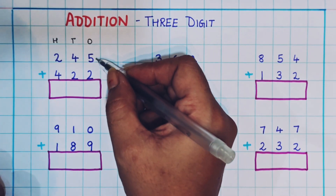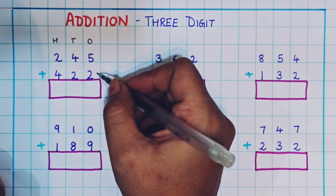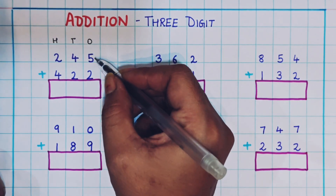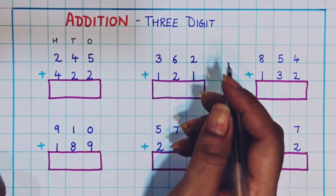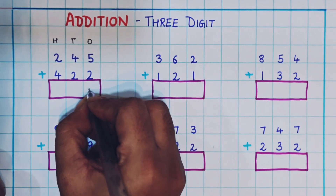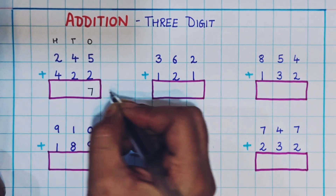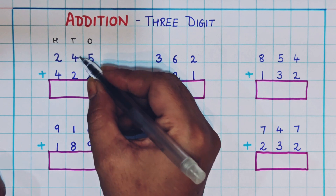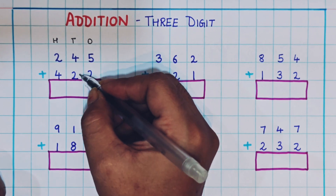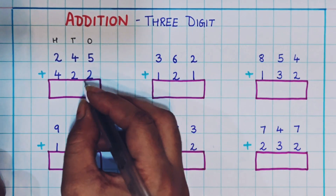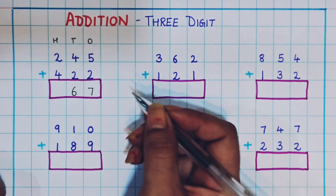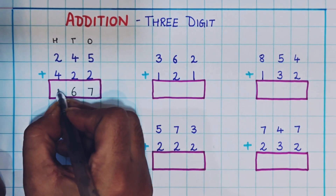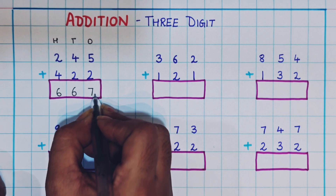5 plus 2 — keep the bigger number in mind and add the smaller number. So 5 in the mind, then 6, 7. Here I will write 7. Now the tens place: 4 plus 2. Keep 4 in mind and add 2: 4, 5, 6. So here I will write 6. So 4 plus 2 is 6. The answer is 667.